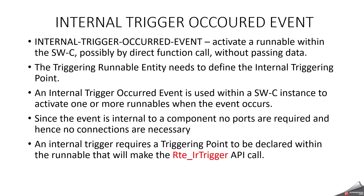Now we can start with the internal triggered occurred event. According to its name, this event activates the runnable within the software component, possibly by direct function call without passing data. An internal triggered occurred event is used within the software component instance to activate one or more runnables whenever the event occurs.